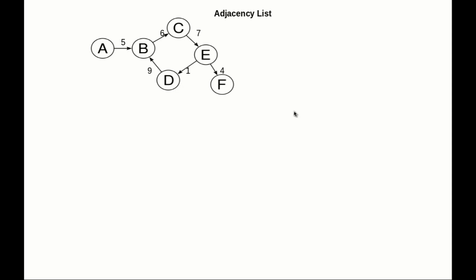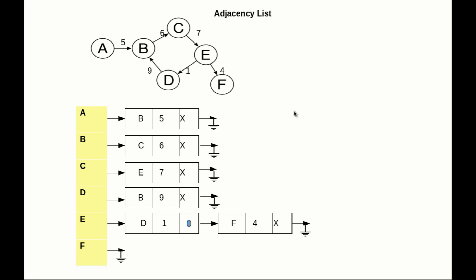Let's try to see how we can represent a graph using an adjacency list. An adjacency list is nothing but an array of linked lists where each vertex or index is mapped to a linked list which contains all the adjacent nodes. For example, if I take this node F, it means there is an edge EF which has a weight of 4.